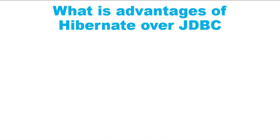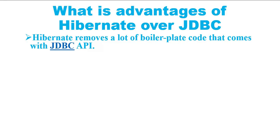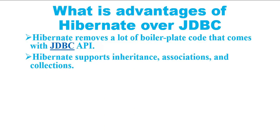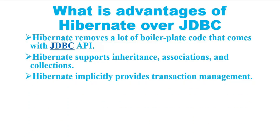Now let's look at the advantages of Hibernate over JDBC. First, Hibernate removes a lot of boilerplate code that comes with JDBC API, making code cleaner and more readable. Hibernate supports inheritance, association, and collections — features not present in JDBC API. Hibernate implicitly provides transaction management; in JDBC you need to write transaction management code using commit and rollback APIs. JDBC API throws SQLException (a checked exception) requiring many try-catch blocks.